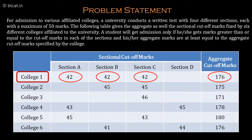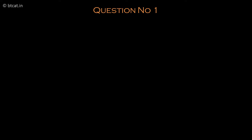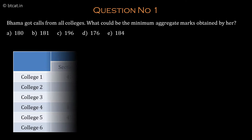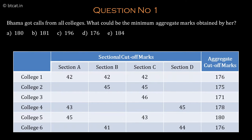Question 1: Bhama got calls from all colleges — what could be the minimum aggregate marks obtained by her? This is a really tough one. Since Bhama got calls from all colleges, whatever marks are given in terms of sectional cutoff in the table, she must clear all of them.